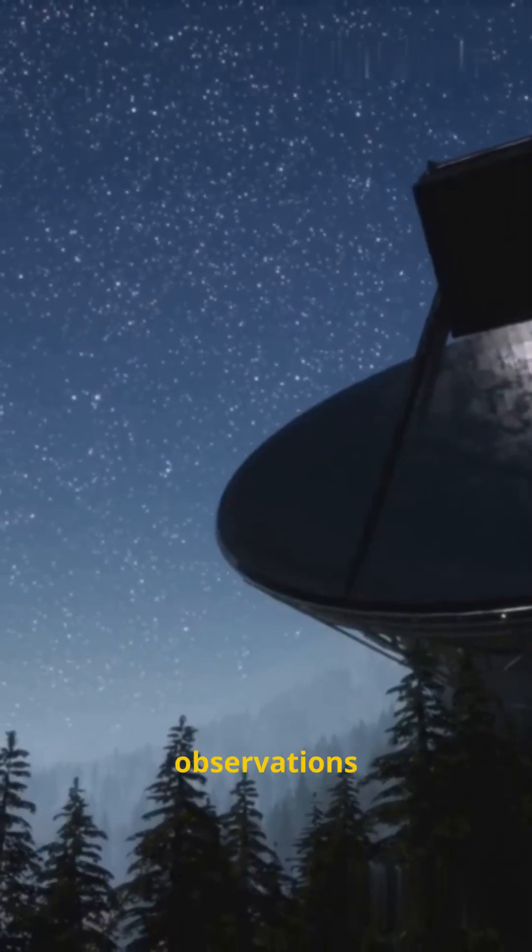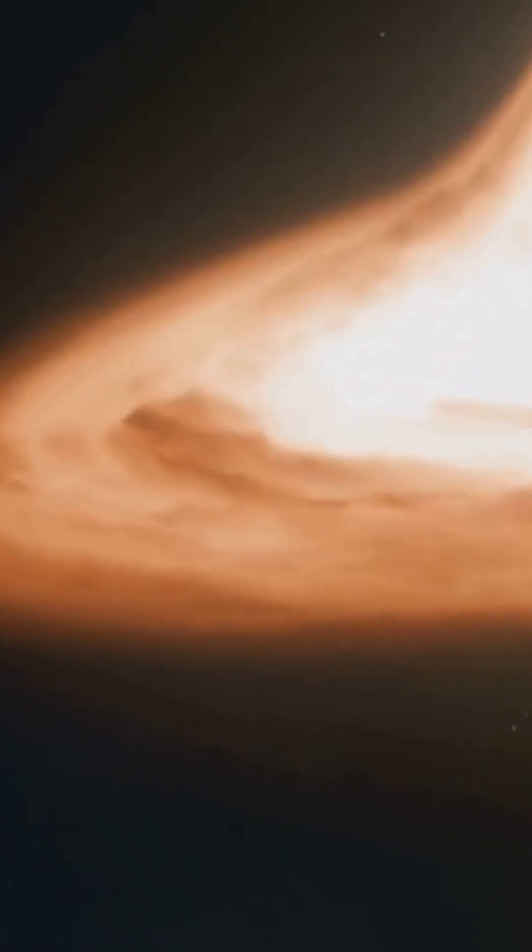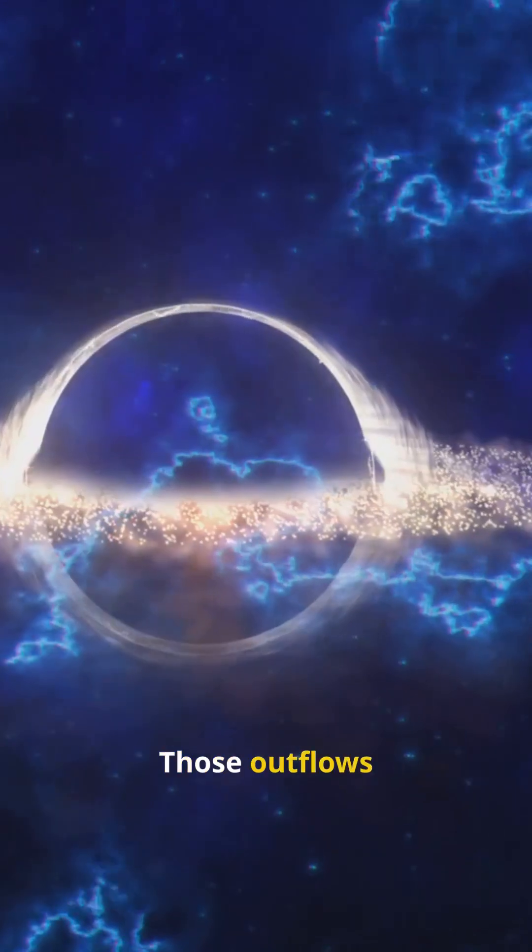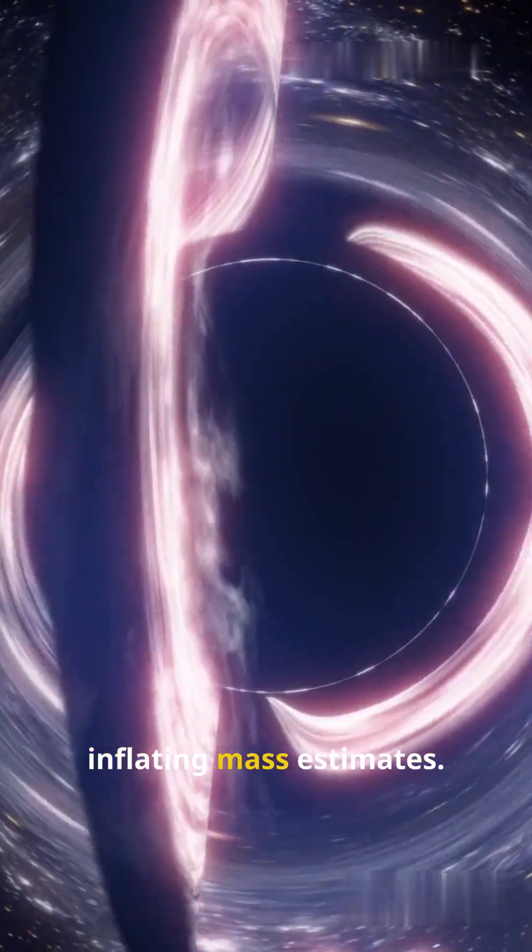VLT observations revealed ferocious gas jets at extreme velocities. Those outflows stretched and skewed emission lines, inflating mass estimates.